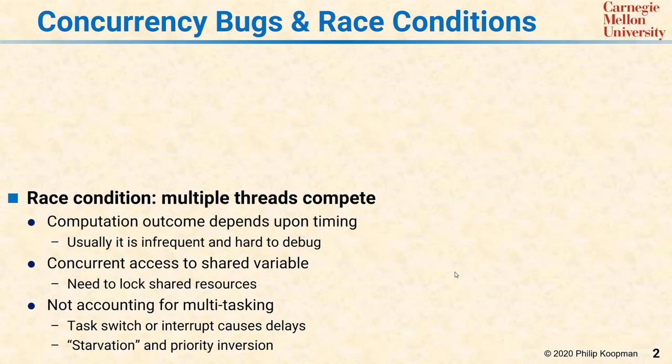Task switching and interrupts cause delays, but they can be worse than just a minor interruption. If you have a prioritized tasking system, timing problems can cause starvation and priority inversion, which can cause your system to entirely fail.